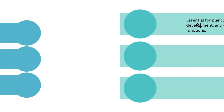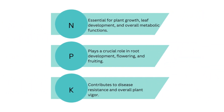First up is nitrogen. Nitrogen is a crucial component of amino acids, proteins, chlorophyll, and nucleic acids — that is the DNA and the RNA. Therefore, nitrogen is essential for plant growth, leaf development, and overall metabolic functions.